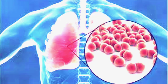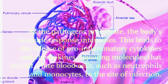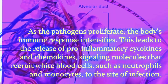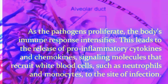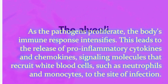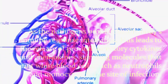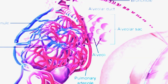The immune response can cause damage to the alveolar lining, leading to increased permeability of blood vessels in the lungs. This increased permeability allows fluid, proteins, and white blood cells to leak into the alveoli, resulting in pulmonary edema. As a consequence, gas exchange in the affected area becomes impaired.